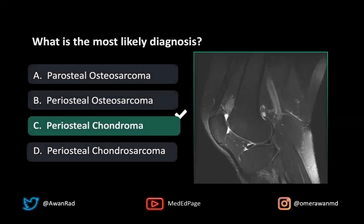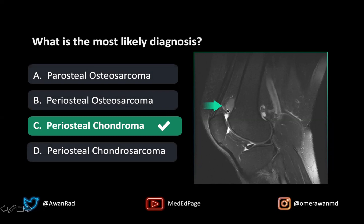This is none other than a periosteal chondroma. The key features are that it's metaphyseal, bright on T2, lobulated like a lot of chondroid tumors, with saucerization of the cortex and no surrounding bone marrow edema. Those are the key distinguishing features that lead to this diagnosis.